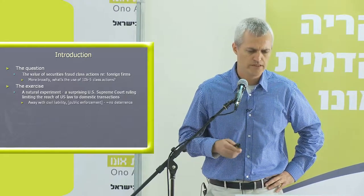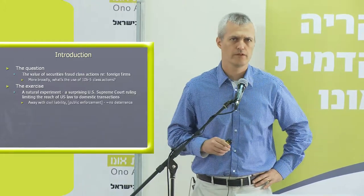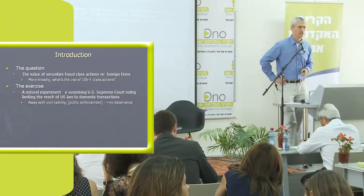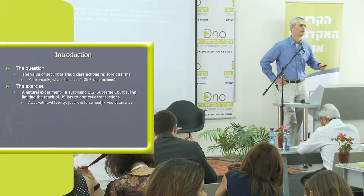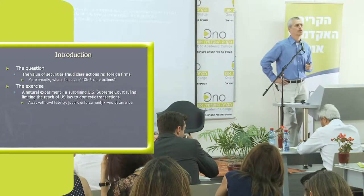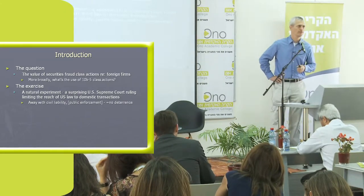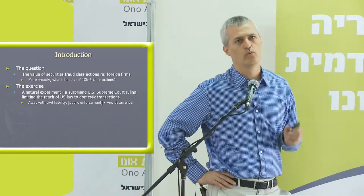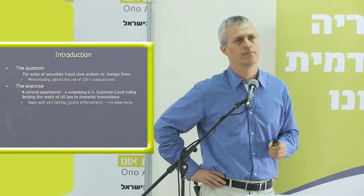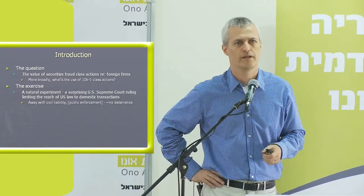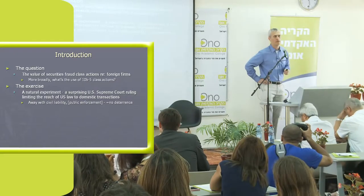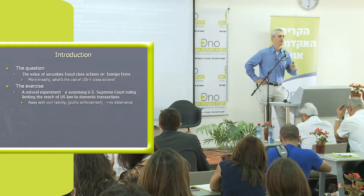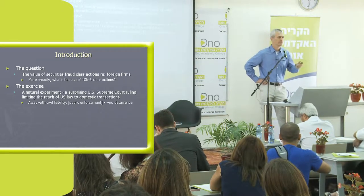The natural legal experiment we take advantage of is a famous ruling by the US Supreme Court in Morrison v. National Australia Bank, which limited the reach of American securities fraud law — limited the scope of private cause of action or private claims under 10B5 only to domestic transactions. With regard to foreign traders — people who traded, sold or purchased their securities outside the United States — it essentially did away with civil liability, shielding public companies from being sued by foreign traders.